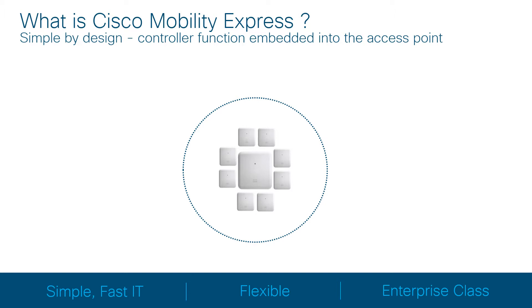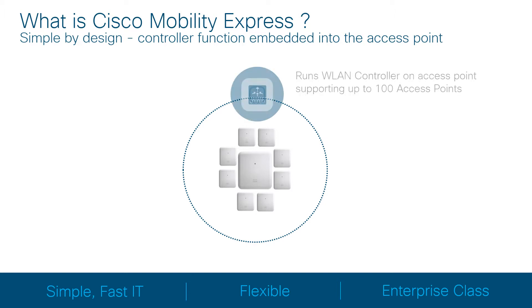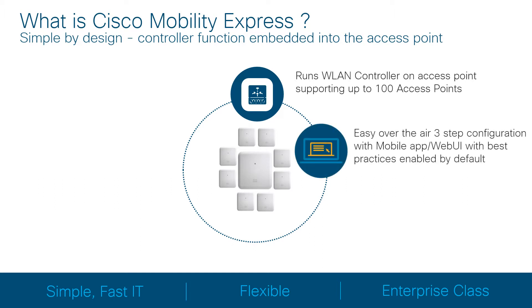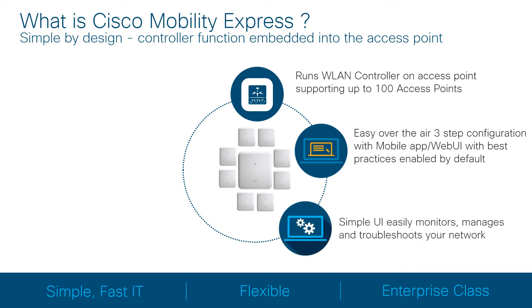Cisco Mobility Express has many features. Consider mentioning these key points as you talk with your customer to help them understand Mobility Express's strengths and advantages. It runs the wireless LAN controller on the access points and can serve small and medium businesses with its ability to support up to 100 APs and 2,000 clients. It is deployed in under 10 minutes with an easy, three-step, over-the-air configuration wizard. Best practices are enabled by default, and it employs an easy-to-understand dashboard to monitor, manage, and troubleshoot small-to-medium business-sized networks.